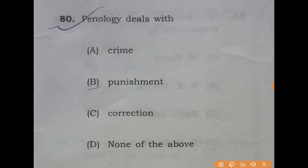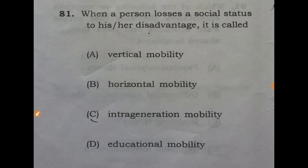Question 80: penology deals with — the answer is B: punishment. Next question 81: when a person loses a social status to his or her disadvantage, it is called — the answer is A: vertical mobility (downward).